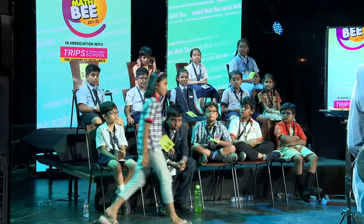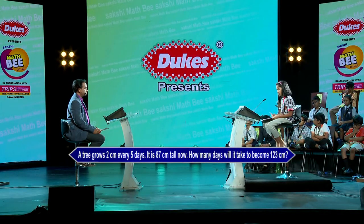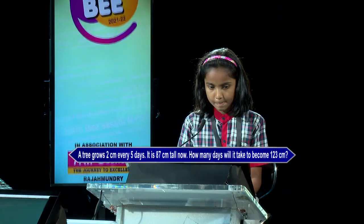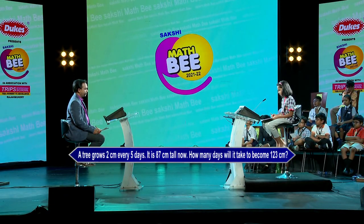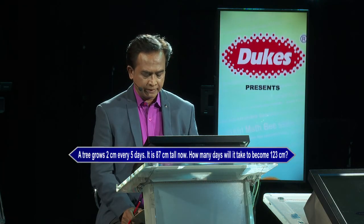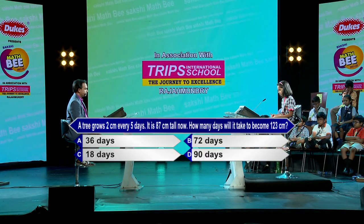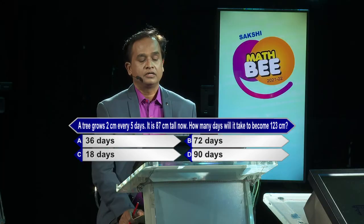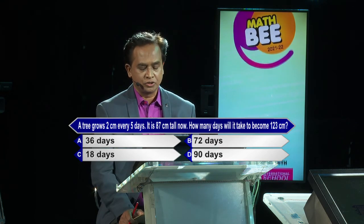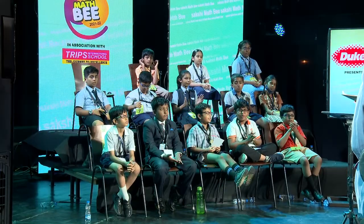Can I alter the sequence now? I'd like to go in reverse order. Aksha, can you please come back? Fighting it for the bronze. All the very best to you all. A tree grows two centimeters every five days. It is 80 centimeters tall now. How many days will it take to become 123 centimeters long? Options: A-36, B-72, C-18, D-90. Contestant answers option D, 90 days. Kindly lock option D. Brilliant — option D is the correct answer. Very good, Aksha.